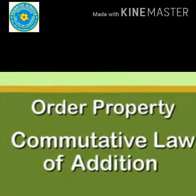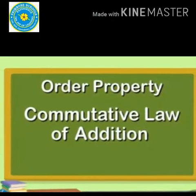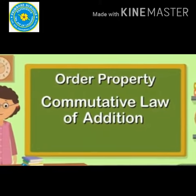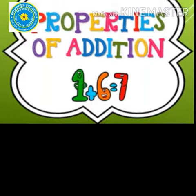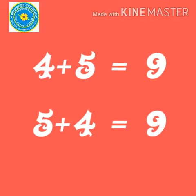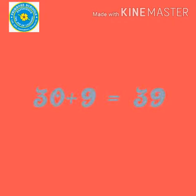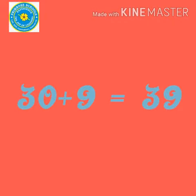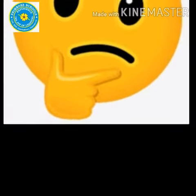The properties of addition are: order property of addition and zero property of addition. In order property of addition, even though we add two numbers in any order, the sum remains the same. That is, 4 plus 5 is 9, and 5 plus 4 is also 9. One more example: 30 plus 9 is 39, and 9 plus 30 is also 39.